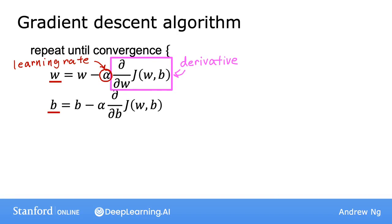What we're going to focus on now is getting more intuition about what this learning rate and what this derivative are doing and why, when multiplied together like this, it results in updates to parameters w and b that make sense.